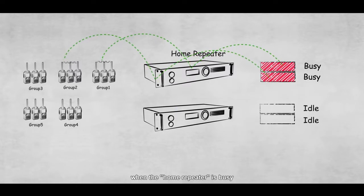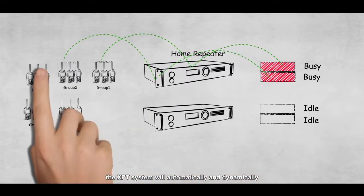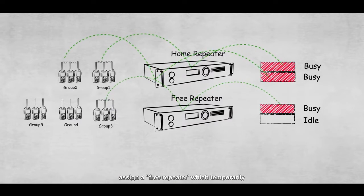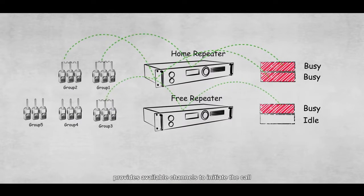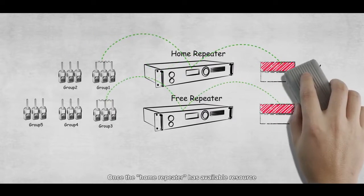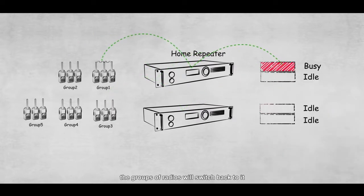Now, when the home repeater is busy, the XPT system will automatically and dynamically assign a free repeater, which temporarily provides available channels to initiate the call. Once the home repeater has available resource, the groups of radios will switch back to it.